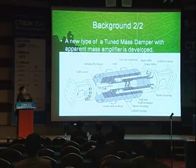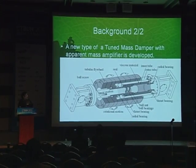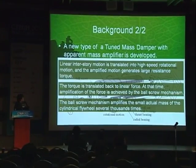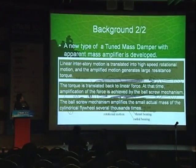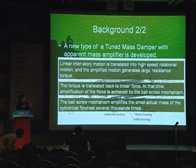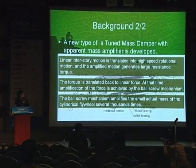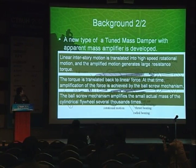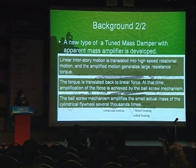This shows a newly developed rotational mass damper which has a rotational amplifying mechanism. Linear motion is translated into high-speed rotational motion, and the amplified motion generates large inertial mass and large viscous resistance force. The torque generated by this mechanism is translated back into linear force, and amplification of the force is again achieved by the ball screw mechanism. So amplification is achieved twice by the ball screw mechanism, which amplifies the small actual mass of the cylindrical flywheel several thousand times.